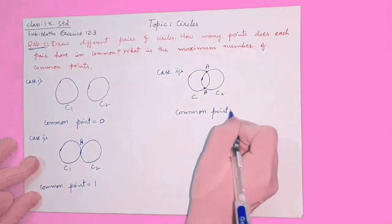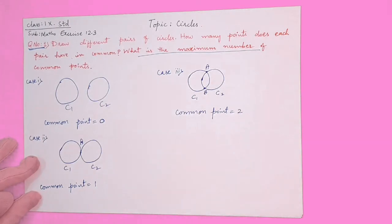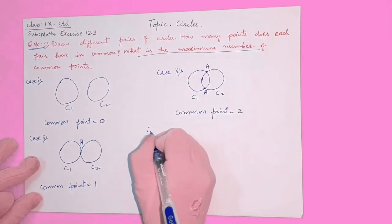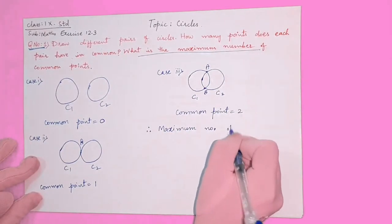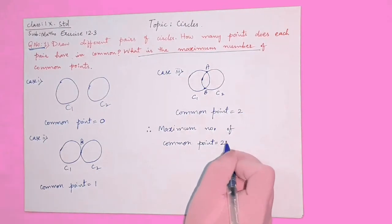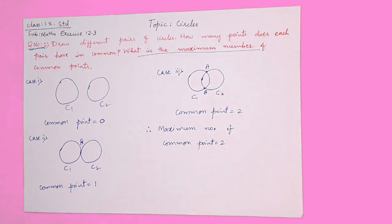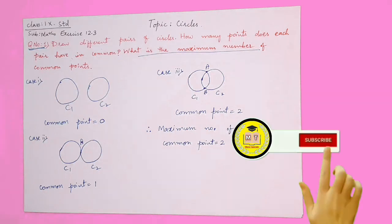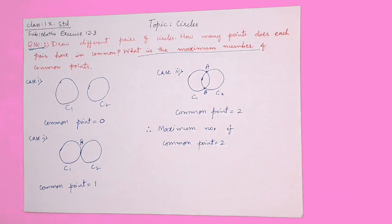The maximum number of common points is two. More than two they will not have. Therefore, a pair of circles can have zero common points if not intersecting, one common point if tangent, and two common points if one circle overlaps into another. The maximum is two. Hope it is clear. If you have any doubt, you can ask in the comment section. Thank you.